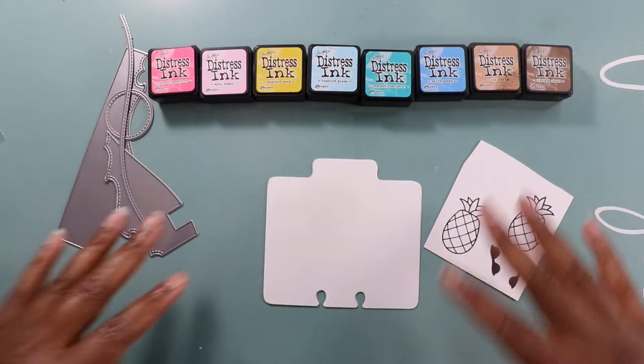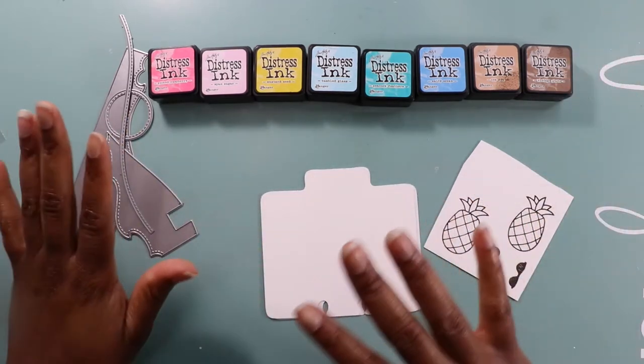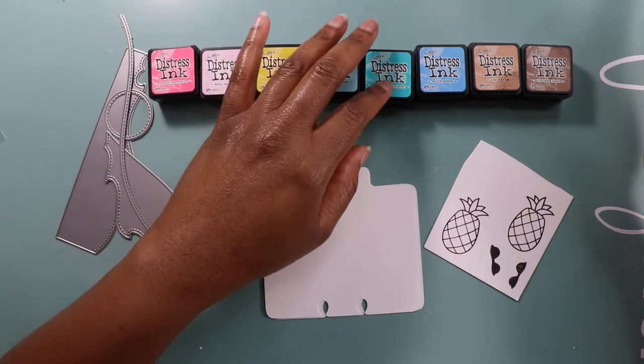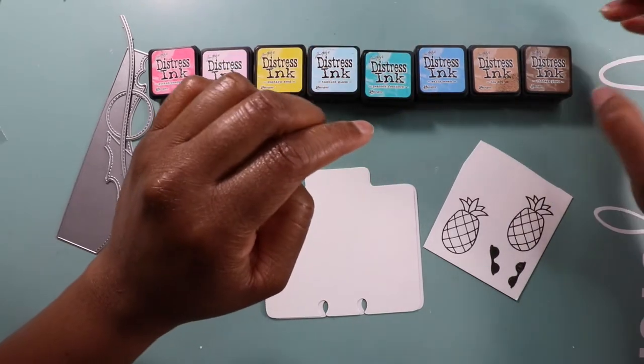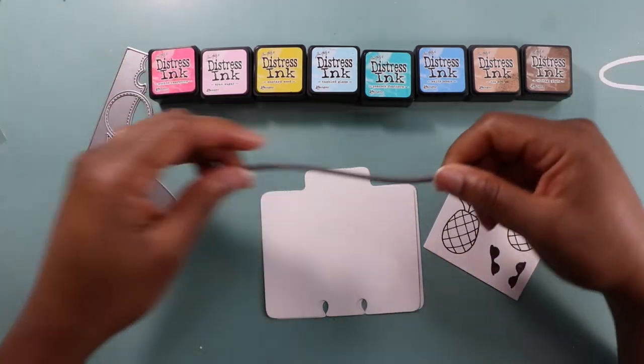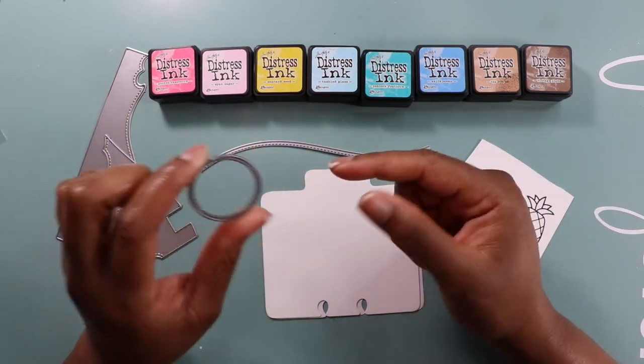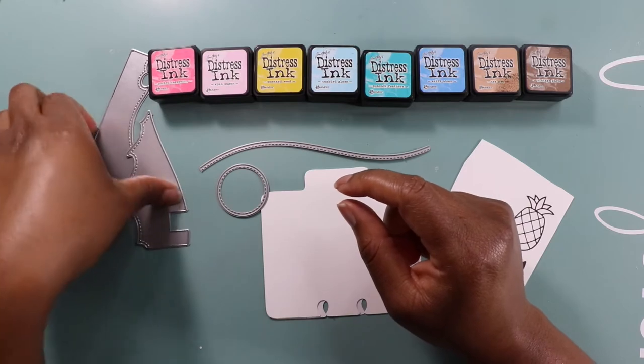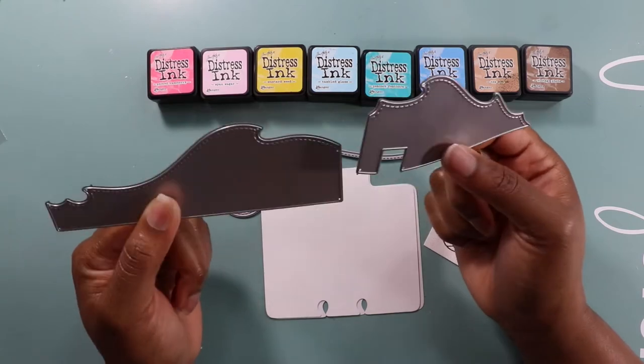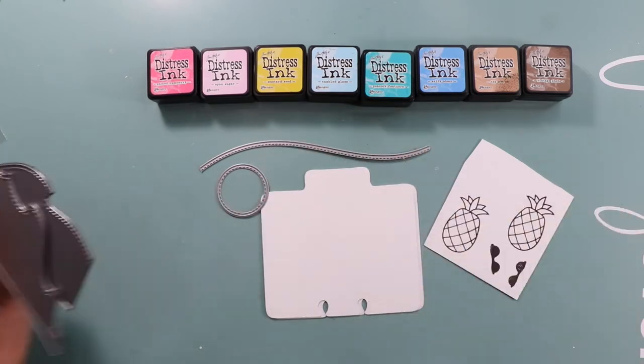Here are some of the distress inks we're using: picked raspberry, spun sugar, mustard seed, tumbled glass, peacock feathers, salty ocean, tea dye, and vintage photo. From my die cuts, I'm using the Lawn Fawn stitched hillside border, the stitched circle die from My Favorite Things, and I am using these Lawn Fawn waves—these are the stitched hillside waves or the stitched waves.